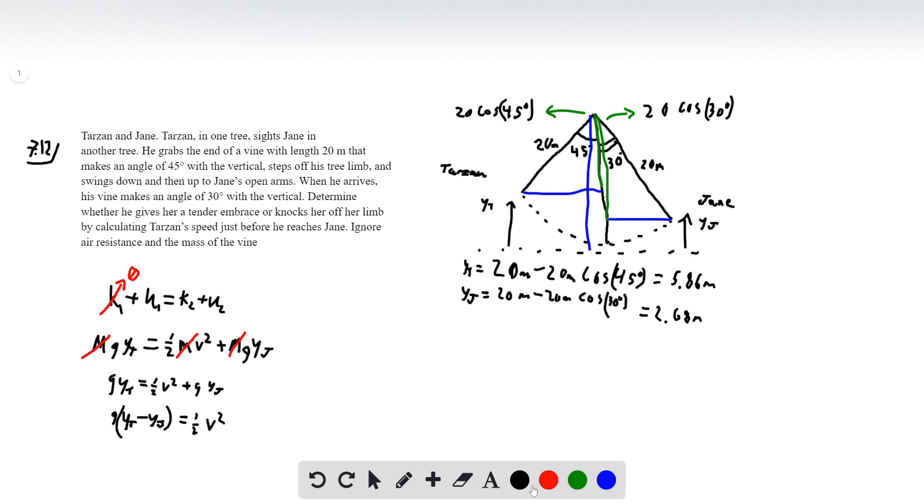Now we can solve for v. A simple way to do that is I'm going to write g of Y_Tarzan minus Y_Jane equal to one half velocity squared. Then just solving for velocity again, we're just going to take the, I'm going to move this over here.